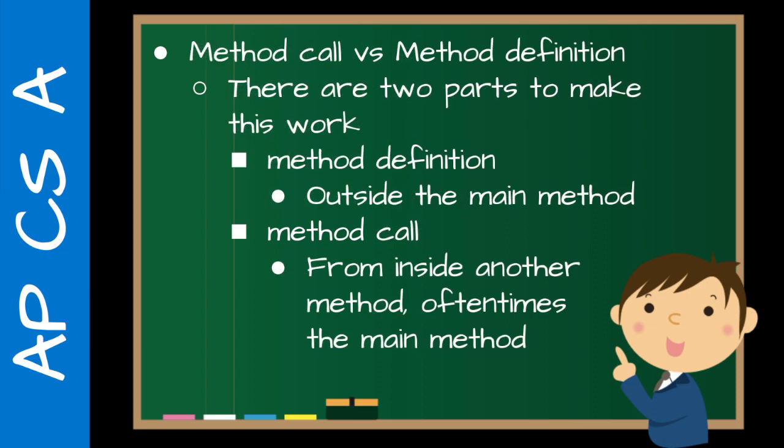So the method call versus the method definition. We have to first define the method. What's nice about Java is it doesn't matter if you define it afterwards or define it before, because in the compilation process from source code to bytecode, it just fixes all that for you. Other languages, the order is a bit more important.